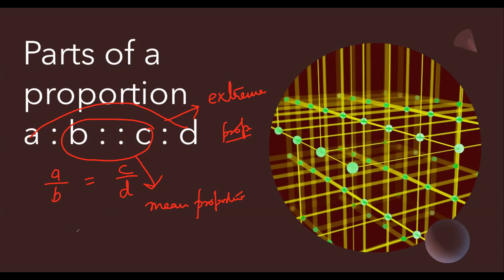I hope you have understood the meaning of mean proportion and extreme proportion. And always remember, the product of mean proportion, that is b into c, is always equal to product of extreme proportion, that is a into d. So you will get many questions where b into c would or should be equal to a into d, that you have to keep in mind.